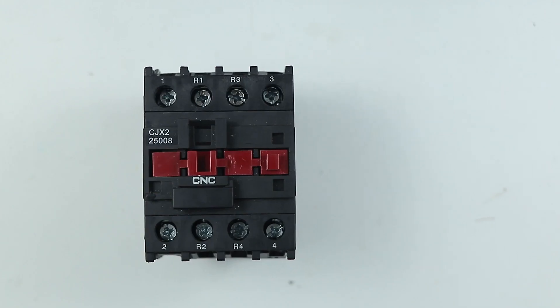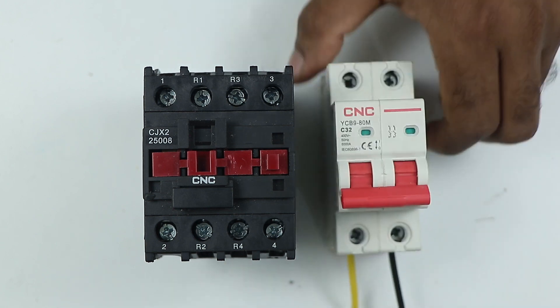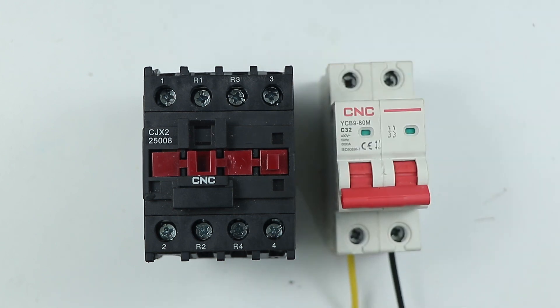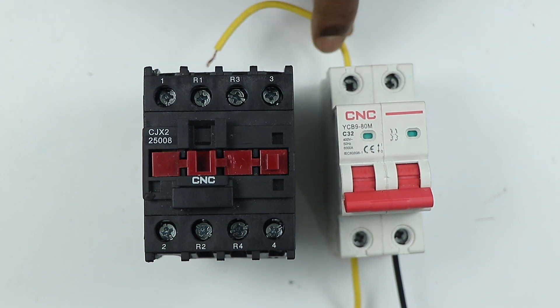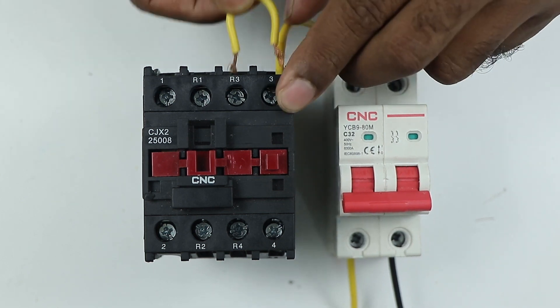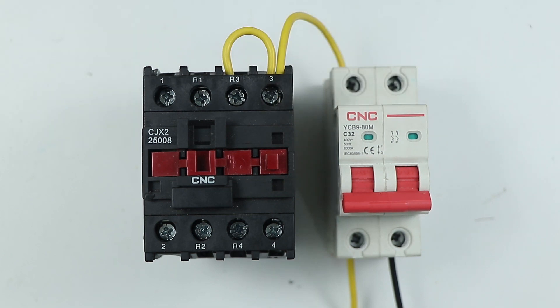For wiring of this contactor, I am using a two pole MCB. From the phase terminal of this MCB, connect a wire and to the NO-NC contact of contactor, I will provide input power supply to both the contacts.